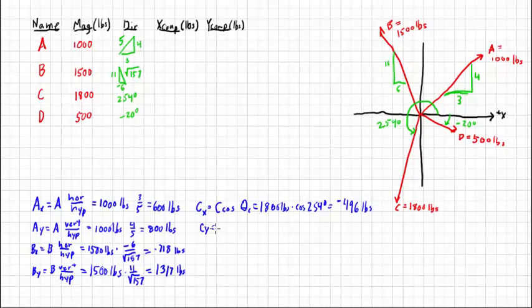CY uses the sine function, and that will bring us also another negative value because C is in third quadrant, 1730 pounds for CY.